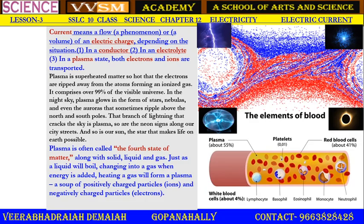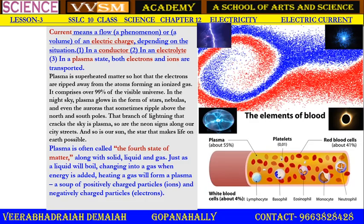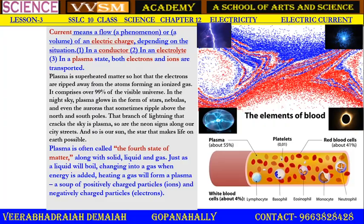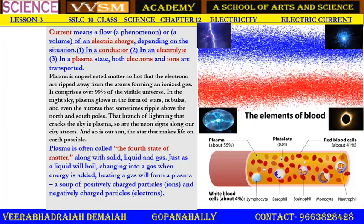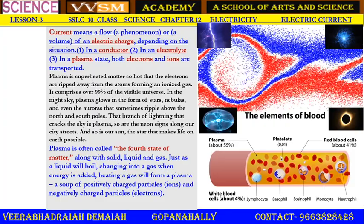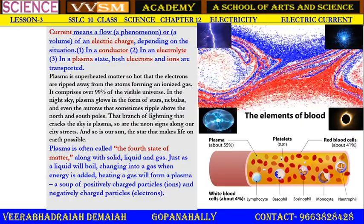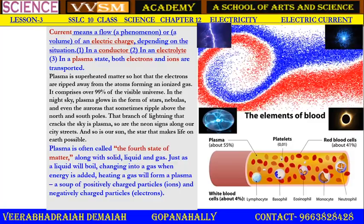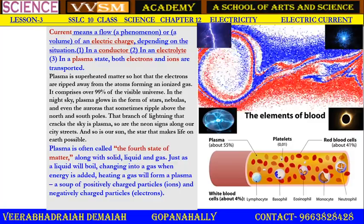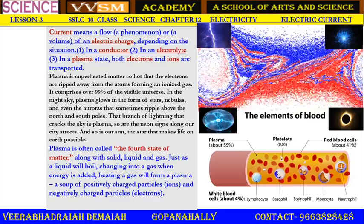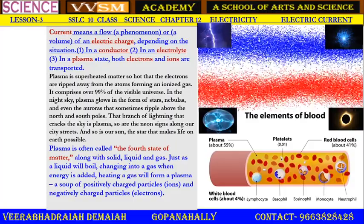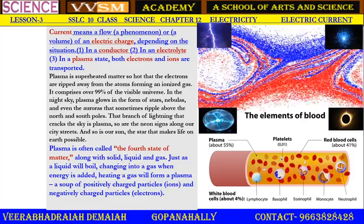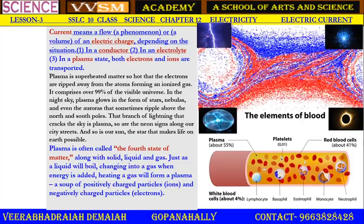Plasma is often called the fourth state of matter, along with solid, liquid, and gas. It is neither a solid nor a liquid nor a gas — it is different from the three states of matter. Just as a liquid will boil, changing into a gas when energy is added, a heating gas will form a plasma: a group of positively charged particles (ions) and negatively charged particles (electrons).